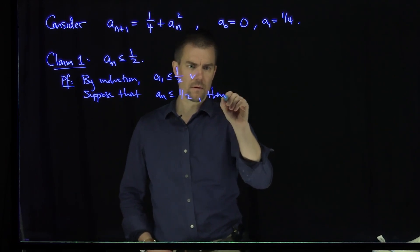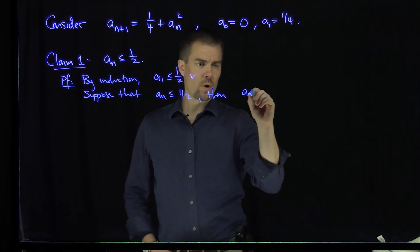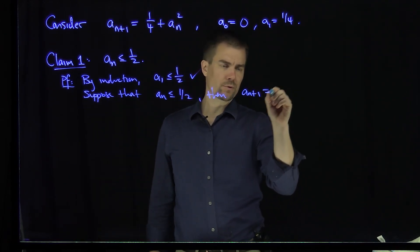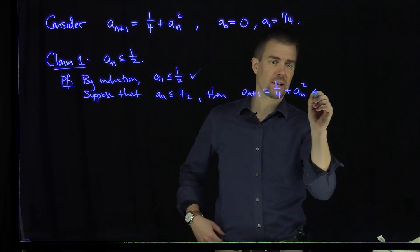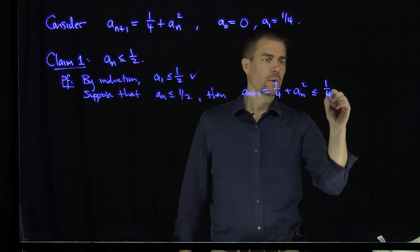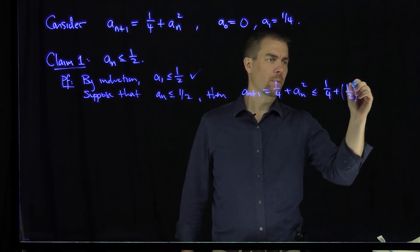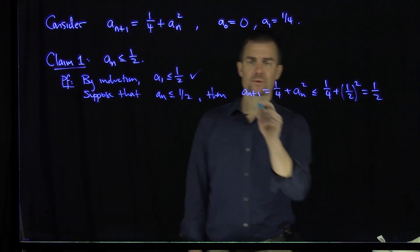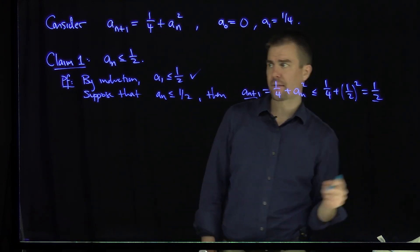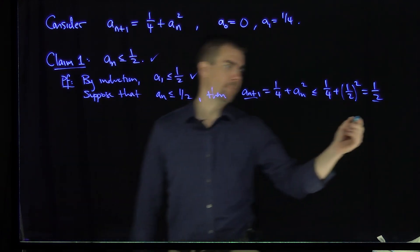Then a_{n+1} by recursion is equal to 1/4 + a_n^2. But a_n is less than or equal to a half. So this is less than or equal to 1/4 + (1/2)^2. But one half squared is a quarter. So I have a quarter plus a quarter, which is a half. And so that shows that a_{n+1} is less than or equal to 1/2. And so our claim is verified by induction.